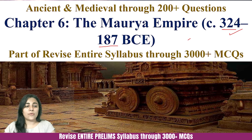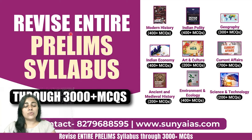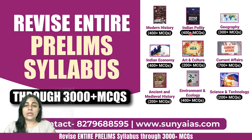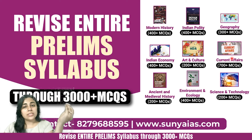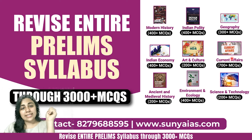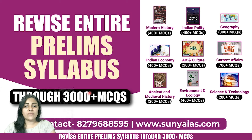There have been a plethora of questions every year from the Mauryan Empire. This lecture is part of a course revising the entire prelim syllabus through 3000-plus MCQs. We have already done polity, economy, modern history, geography, and environment and ecology. Now we are on ancient and medieval history, then we will do art and culture, science and tech, and current affairs. If you get the PDFs before the lecture, solve the questions, read the answers, and only if you still have doubts come to the classes — that will save you a lot of time.